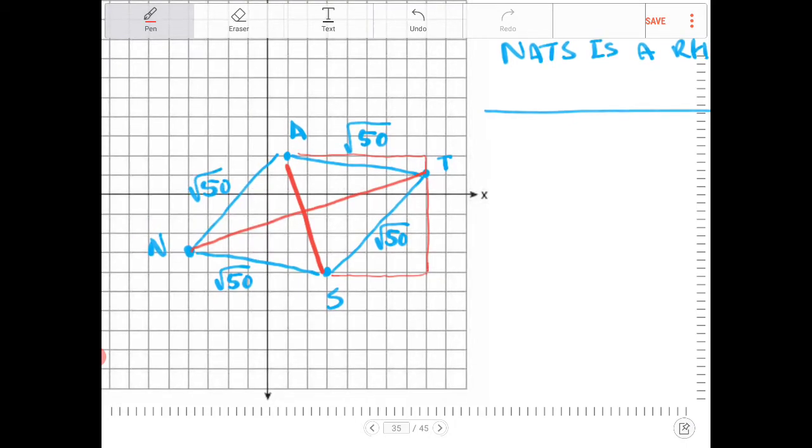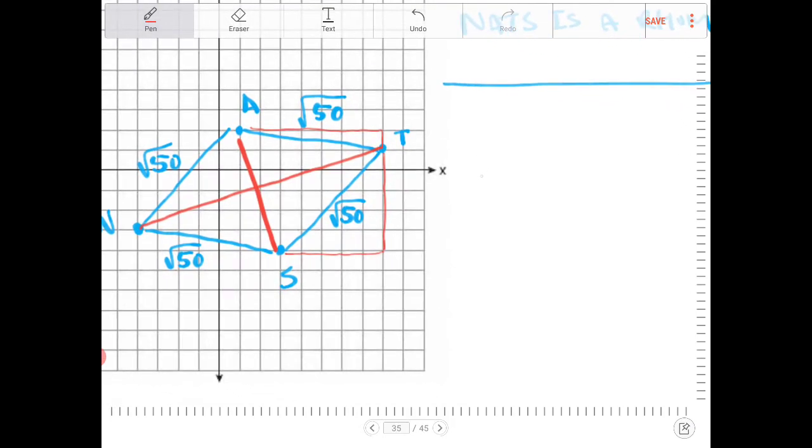So we can find the midpoint of A-T, of A-S, rather, by finding out what the average of those are, right? So it's 1 plus 3 divided by 2, comma, 2 plus negative 4 divided by 2. So the midpoint happens to be 2, comma, negative 1, right?